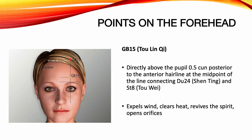Gallbladder 15, Toe Lean. Location: directly above the pupil, 0.5 Sun posterior to the anterior hairline, at the midpoint of the line connecting Du 24 and Stomach 8. Functions: expels wind, clears heat, revives the spirit, opens orifices. Indications: headache, vertigo, painful eyes, seizures, coma, convulsions in children, nasal congestion, tearing eyes.